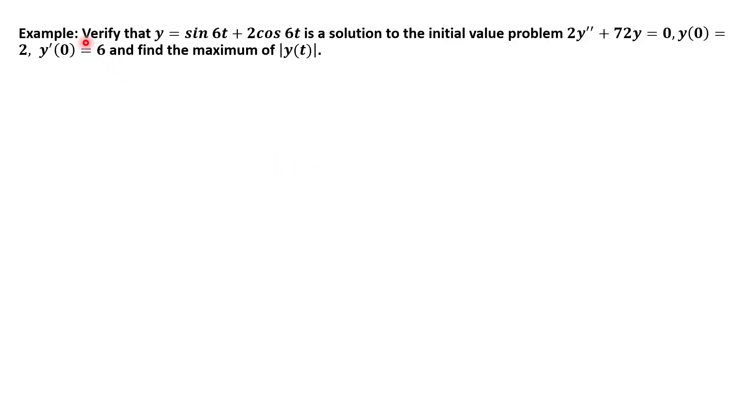So we're just going to do a quick example where we verify that this is in fact a solution. So y equals sin(6t) plus 2cos(6t). We want to verify it's a solution to this initial value problem. Notice this is a second order differential equation. Your highest derivative you see present is second derivative. And it's an initial value problem because we have some initial conditions. And notice because it's a second order equation, we actually have to have initial conditions involving the zeroth derivative, the original function, and the first derivative.